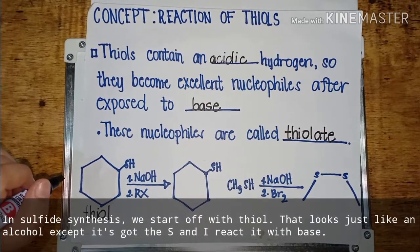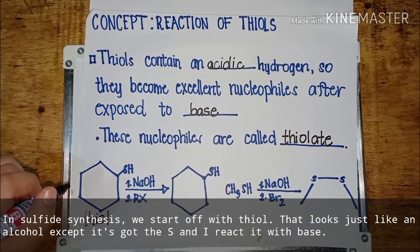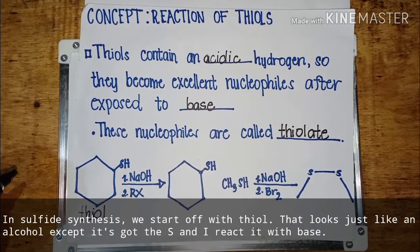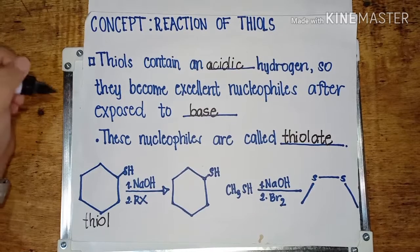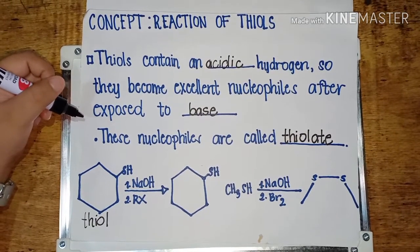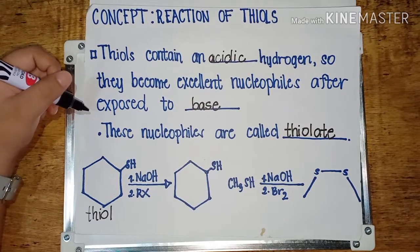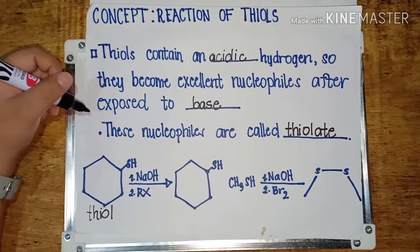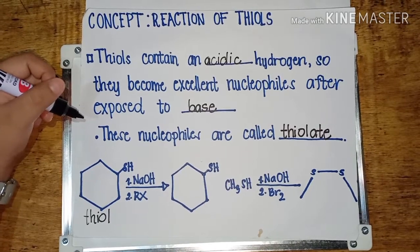In sulfide synthesis, we start off with a thiol — that looks just like an alcohol except it has an S — and we react it with base. The base is going to deprotonate the hydrogen and make the thiolate ion. Then the thiolate ion performs an SN2 reaction on an alkyl halide to alkylate it. What we wind up getting as a product is a sulfide, which is the analog to an ether, just with S instead of O.